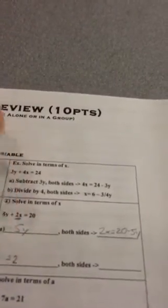Now if we want to get x alone, we're going to divide both sides by 2. We're left with x equals 10 minus 5 divided by 2y. And that is it.